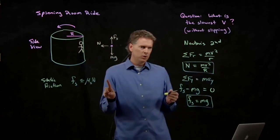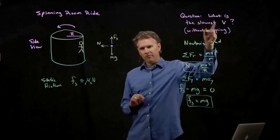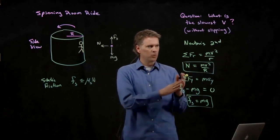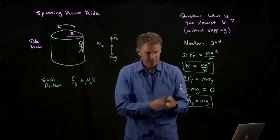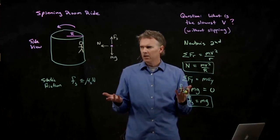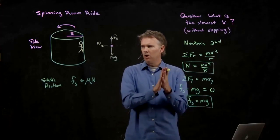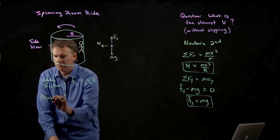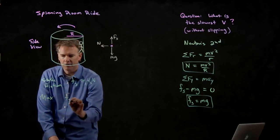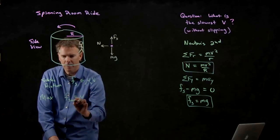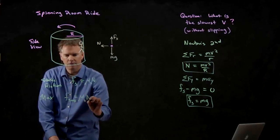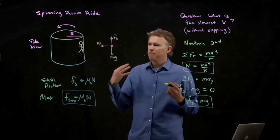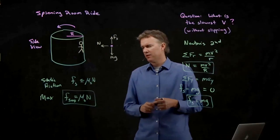What we want to do is we want to go with the slowest V. So do you want the wall to be sticky? Or do you want the wall to be slippery? Sticky, right? You want to be able to stick to the wall such that you can go at a slower speed. And that means that we are looking at the maximum that static friction can be. F S max, which is just mu S times N. And we want to take advantage of the maximum amount of static friction that we could.